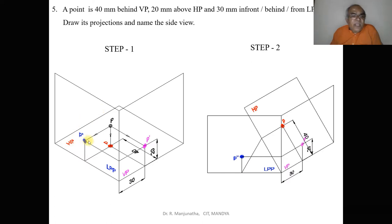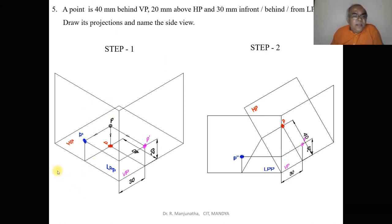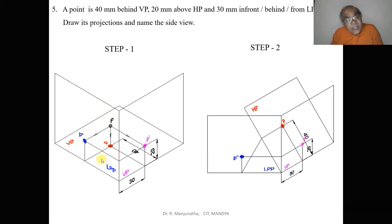When you look from the left-side view, the plane is between the object and the observer. When you look from the right-side view, the object is between the plane and the observer. We consider both left and right side views for LPP because the plane is perpendicular to the observer, and whatever object is placed on that plane will always be seen when you look from the perpendicular direction.